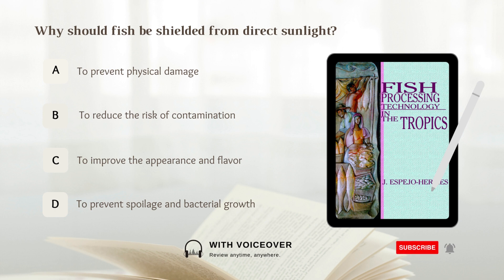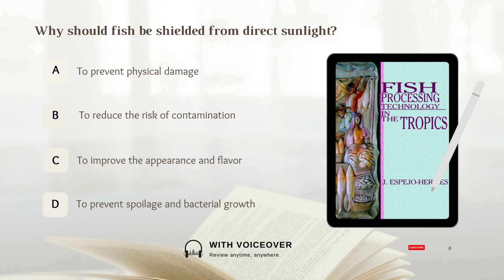Why should fish be shielded from direct sunlight? A. To prevent physical damage. B. To reduce the risk of contamination. C. To improve the appearance and flavor. D. To prevent spoilage and bacterial growth. Answer: D. To prevent spoilage and bacterial growth.